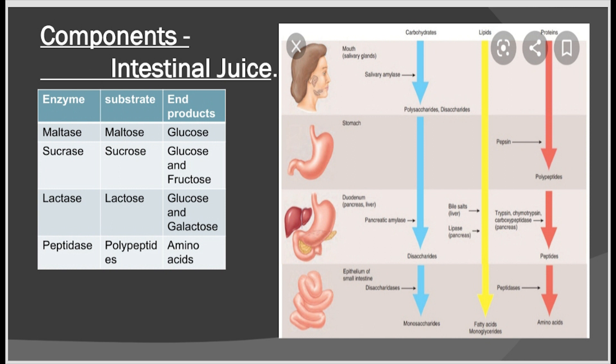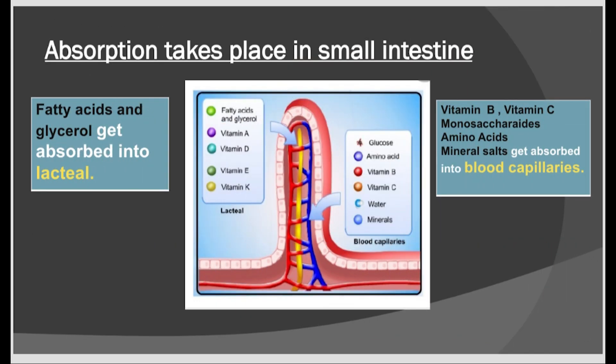As food passes along the small intestine, it is mixed with intestinal juice containing the enzymes maltase, sucrase, lactase, and peptidase. The enzyme maltase converts maltose into glucose. The enzyme sucrase converts sucrose into glucose and fructose. The enzyme lactase converts lactose into glucose and galactose. The enzyme peptidase converts polypeptides into amino acids. These end products of digestion are then absorbed into the highly vascularized villi.